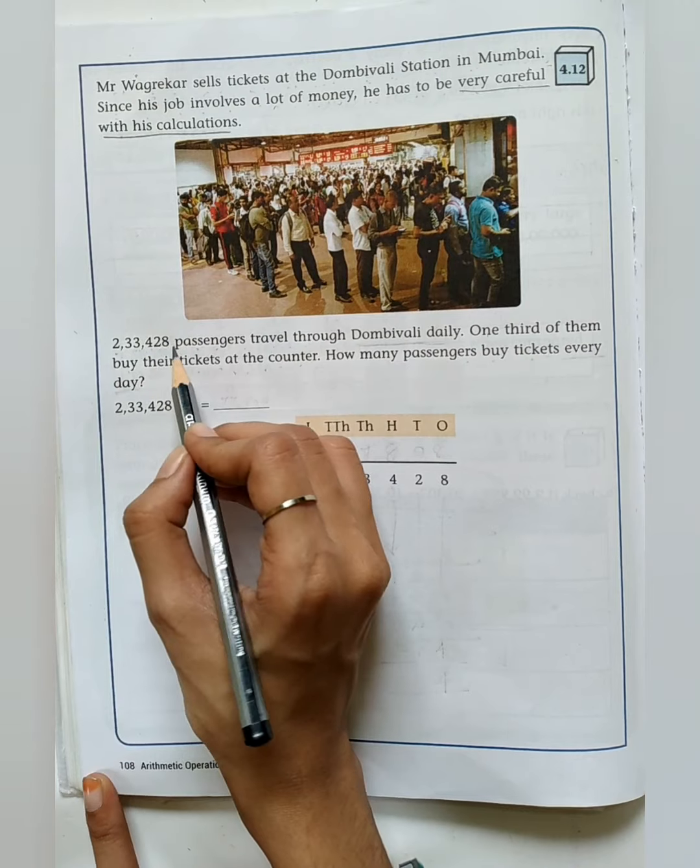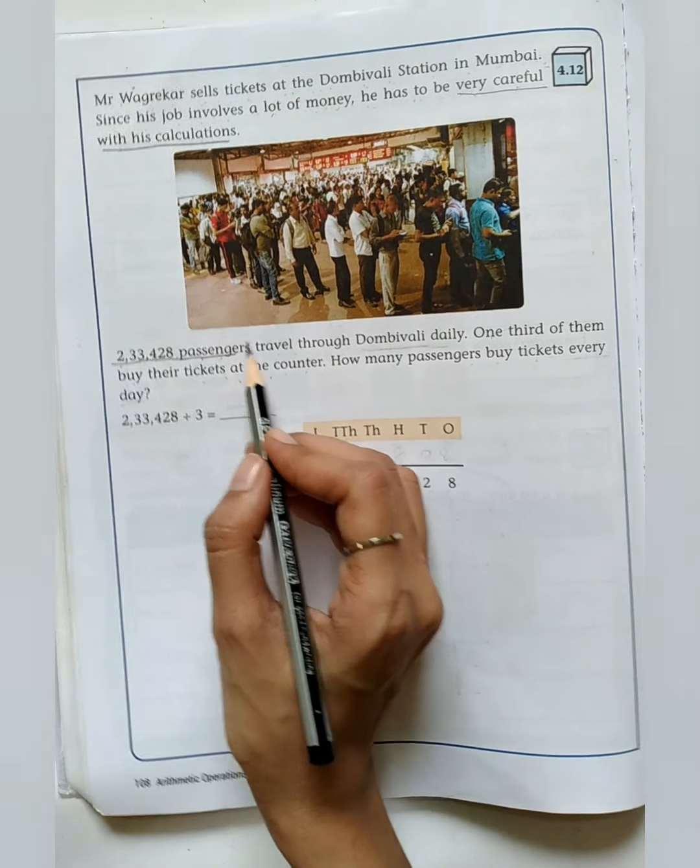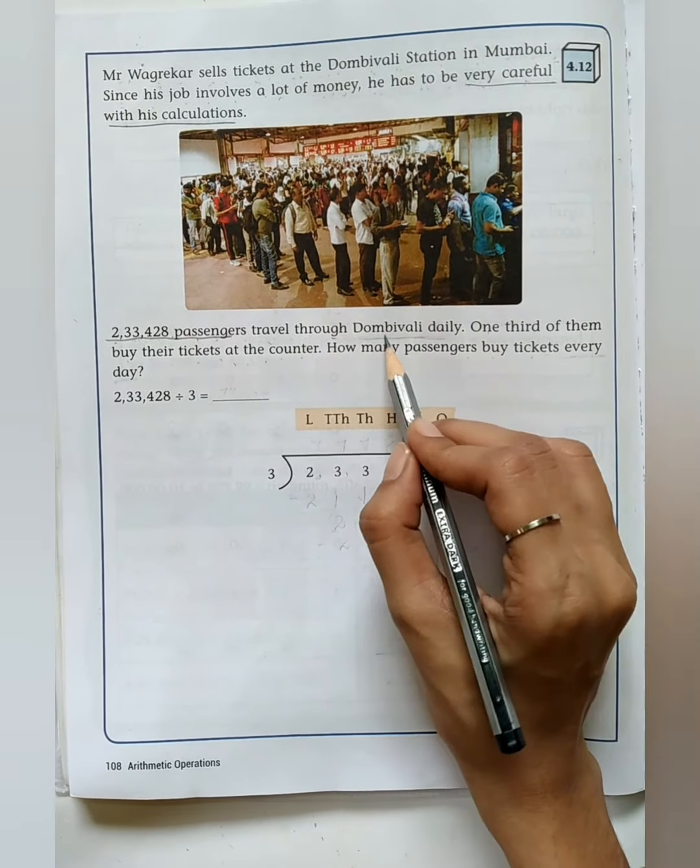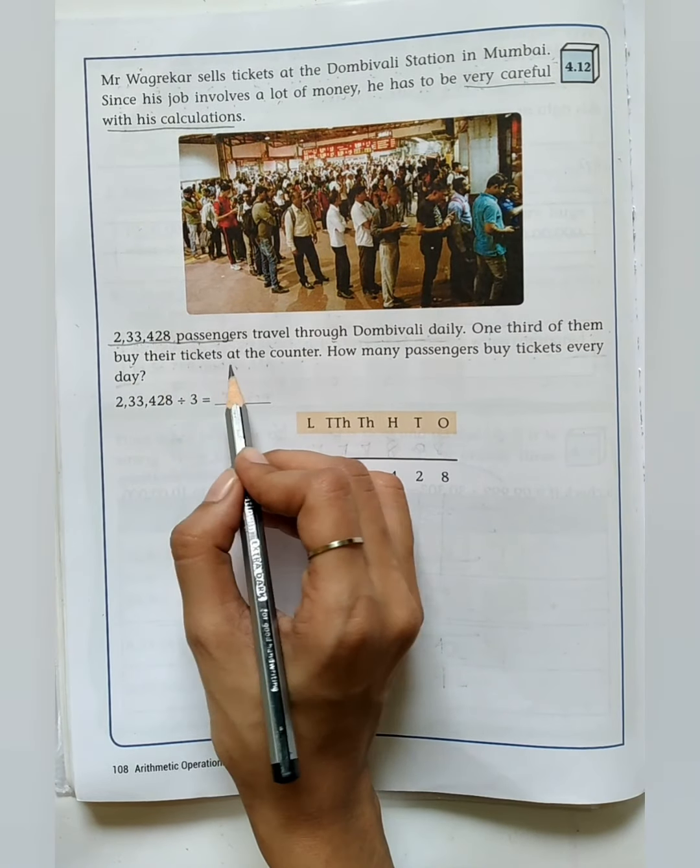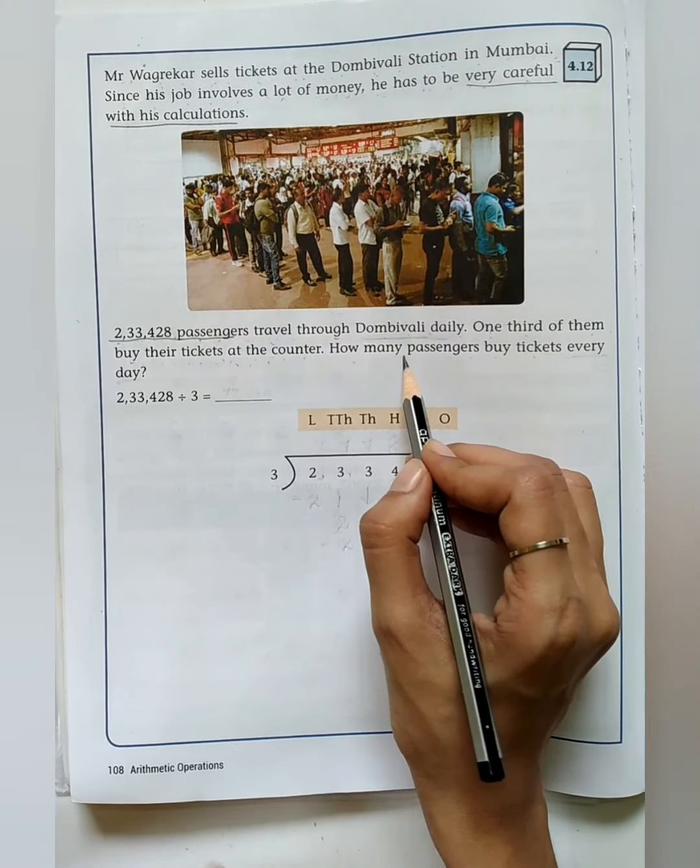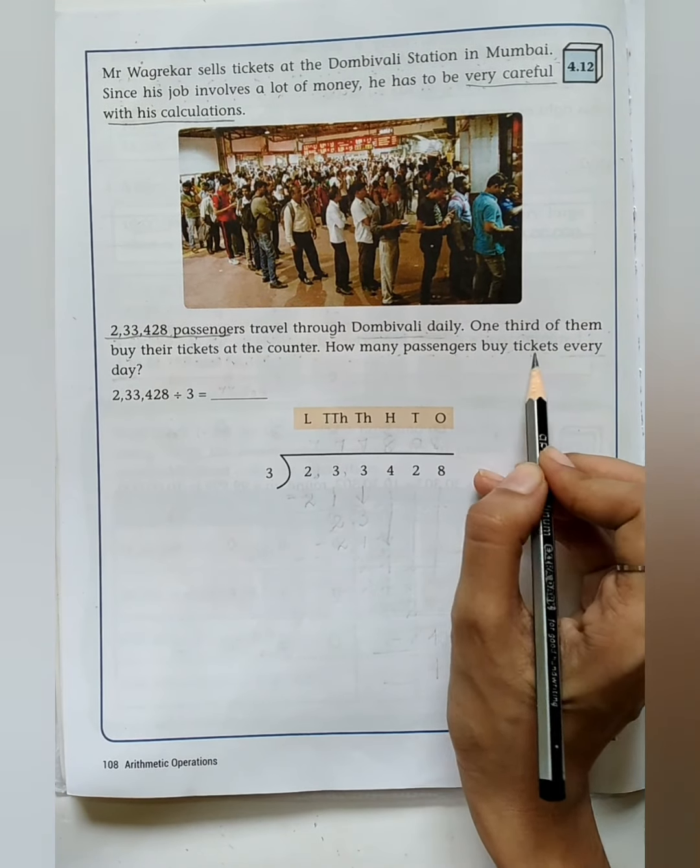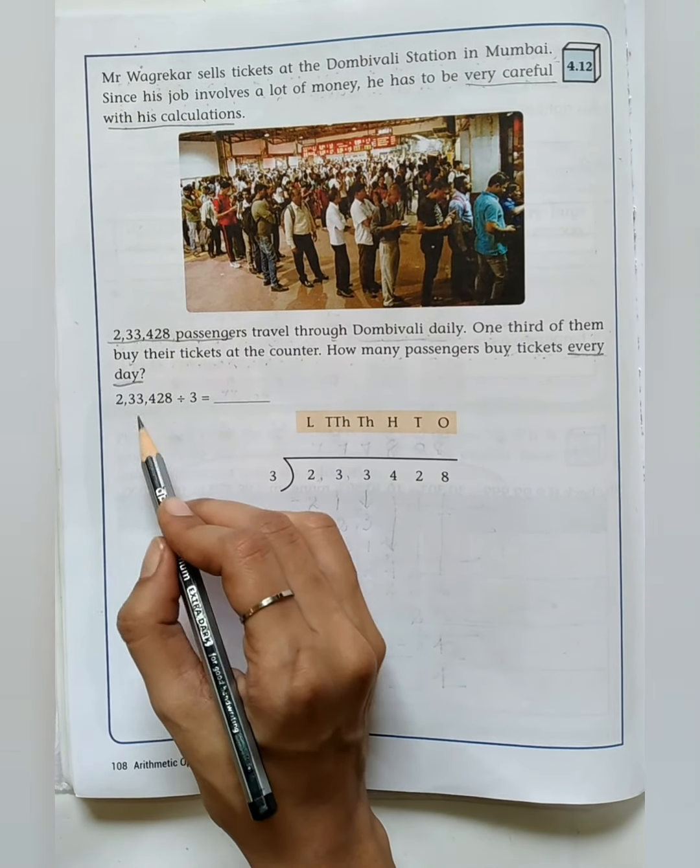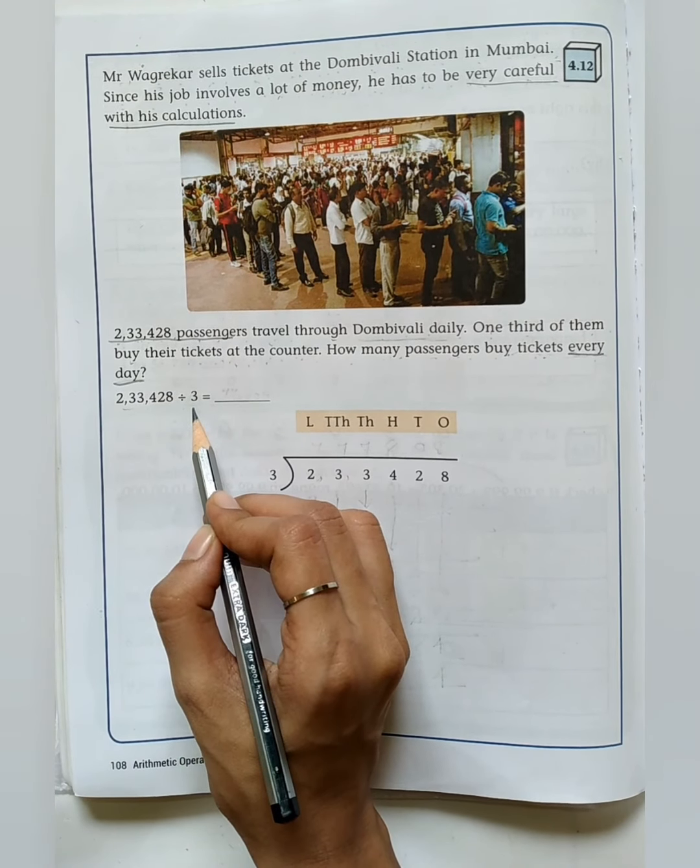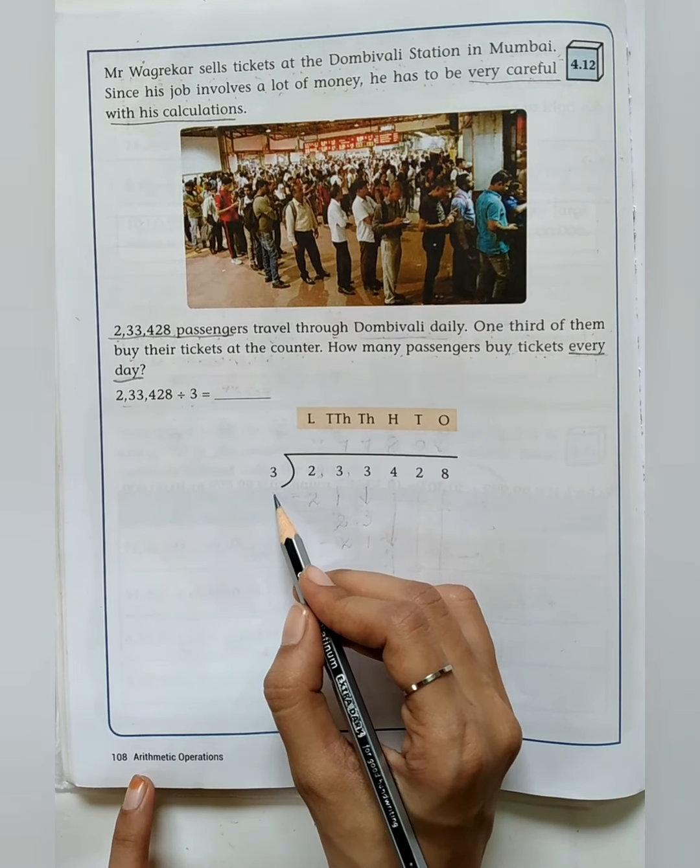2,33,428 passengers travel through Dombivali daily. One third of them buy their tickets at the counter. How many passengers buy tickets every day? Every is a keyword for division, so we are going to do division here and we have to calculate accurately.